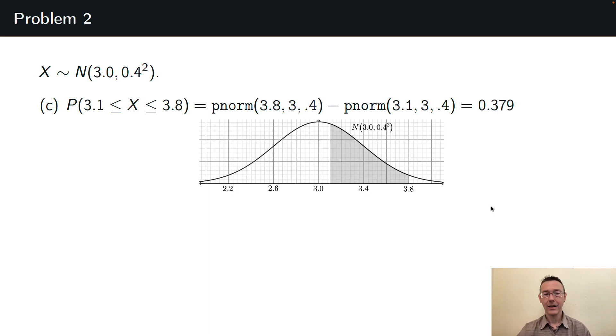Here's the picture that goes with that. The pnorm of 3.1, 3, 0.4 is this unshaded area to the left of 3.1 and pnorm of 3.8, 3, 0.4 will be all of the area to the left of 3.8. So both this shaded area and the non-shaded area just to the left. So when I take this shaded area and that non-shaded area, the 3.8, and subtract out the non-shaded area over here, that's the pnorm of the 3.1, I'm left with just this shaded area. So it's 0.379 overall. Another way to interpret this, by the way, is that this area here that's shaded represents 37.9% of the area under that graph.